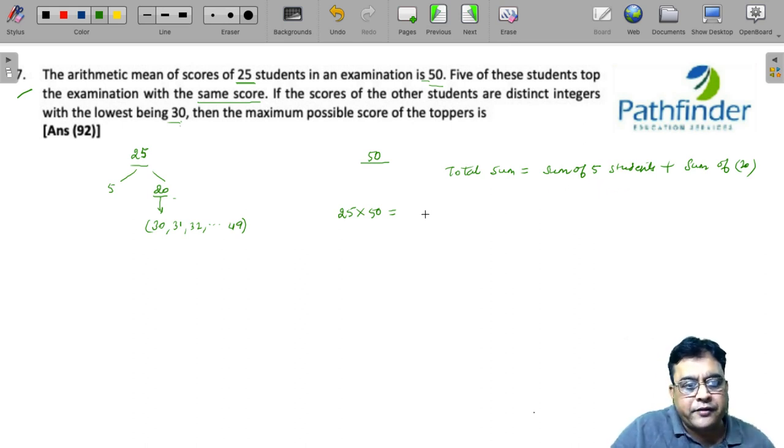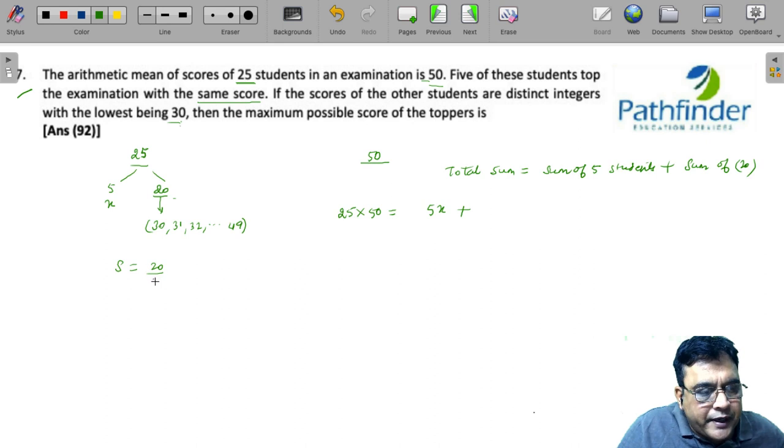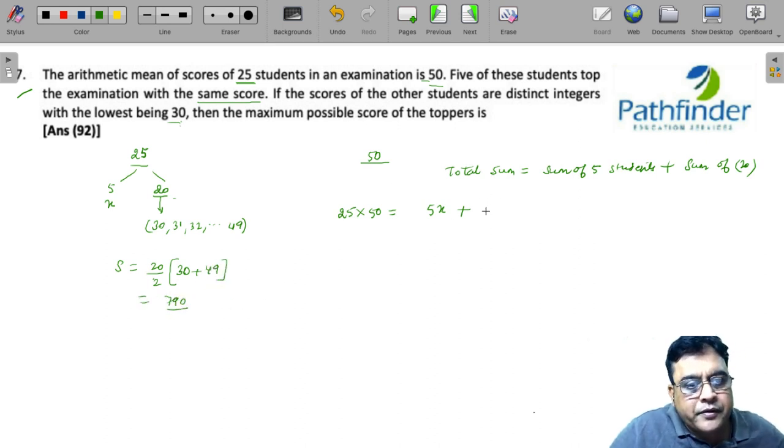What is the sum of these 5 students? We do not know. Let us call their score to be x, so 5x. What will be the sum of these numbers? Obviously this is an arithmetic progression, so sum of an AP with 20 terms is 20 by 2 into a plus l, so 30 plus 49, which is equal to 790.